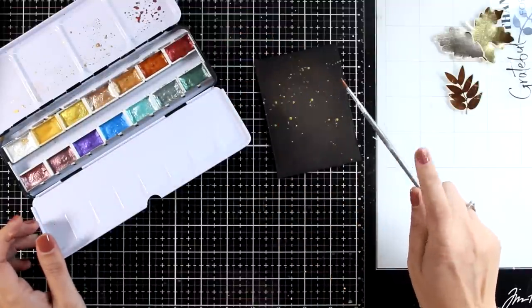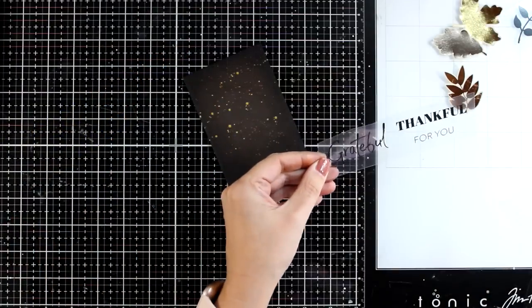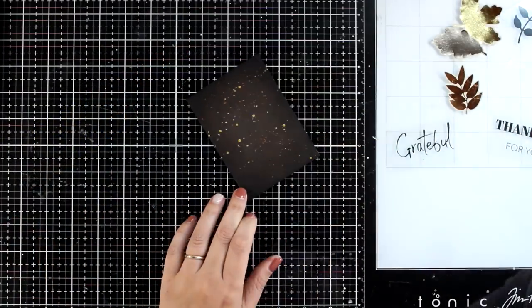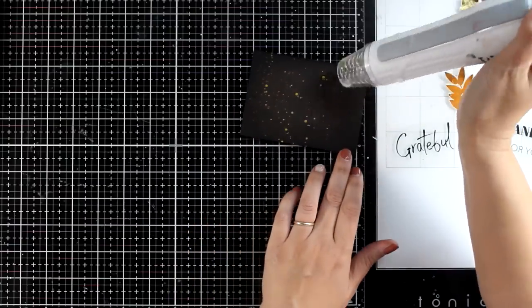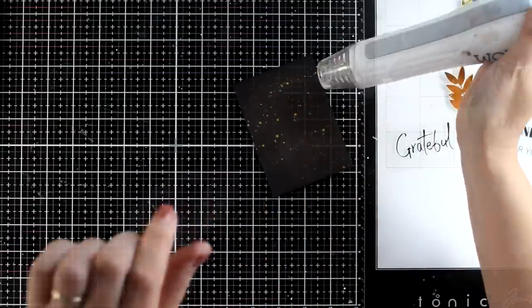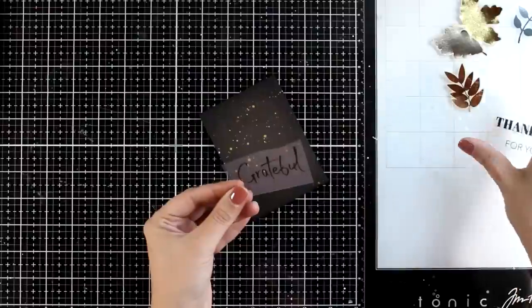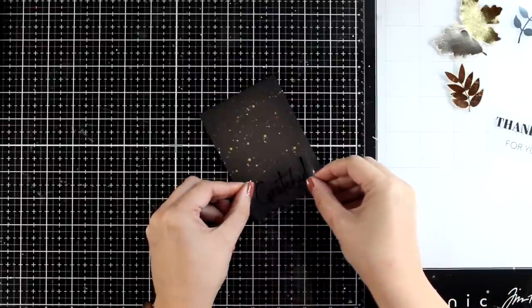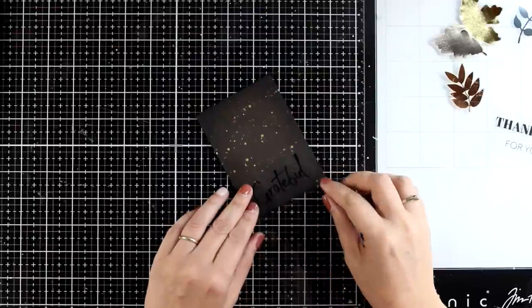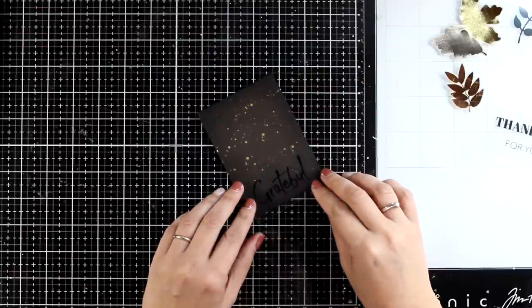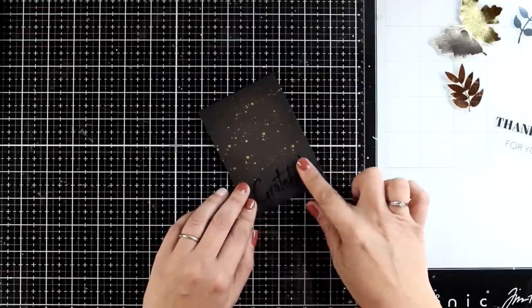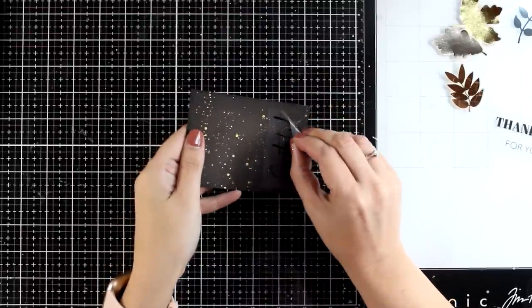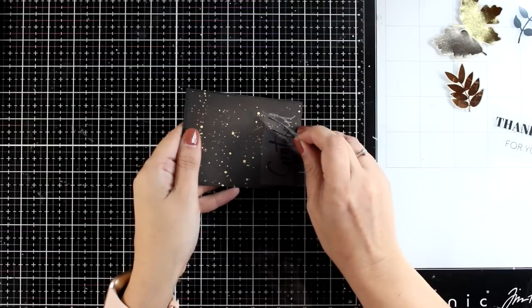Now for the sentiment, I'm going to repeat the same technique. Since there are a couple of them available, I decided to go with 'grateful'. But before I stick it down, I'm going to make sure that both the ink and the splatters are completely dry. So I'm going to peel off the backing off my word. I'm going to stick it where I want the sentiment to be, run it through the die cutting machine to transfer the adhesive from the acetate to my cardstock, and then just peel it off. You can see better the adhesive here just because it is on top of a dark colored cardstock.